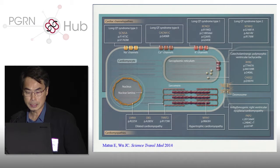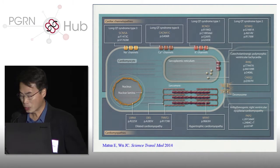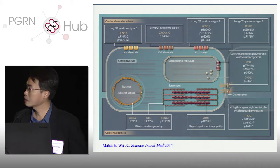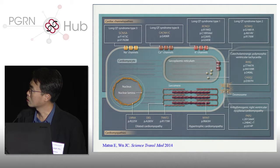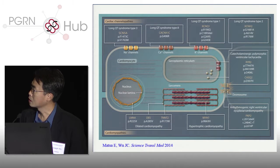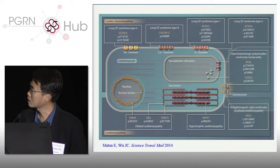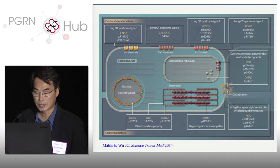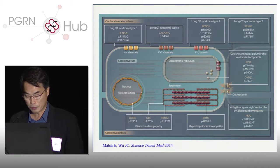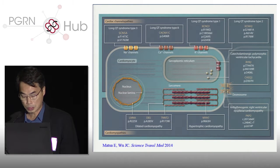Once you generate these cardiomyocytes, you can do quite a bit of disease modeling. Some of the diseases I'll touch on include long QT disease, CPVT, ARVD — which actually can cause sudden death — hypertrophic cardiomyopathy, and dilated cardiomyopathy. I'll give you a few examples of how we do this.